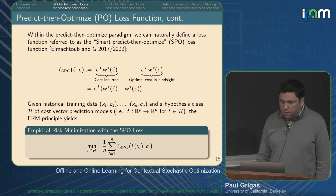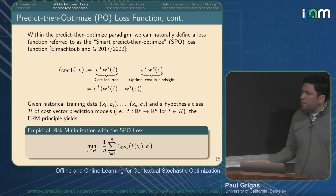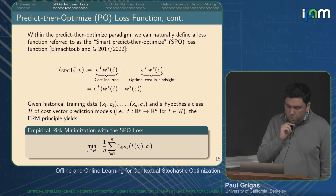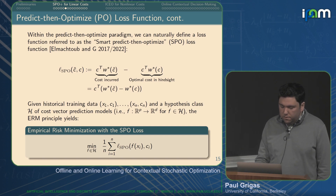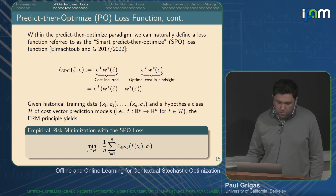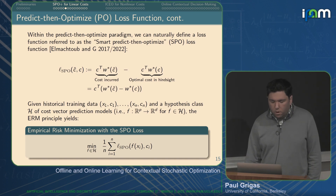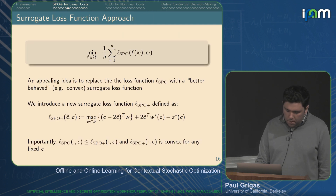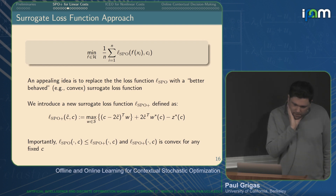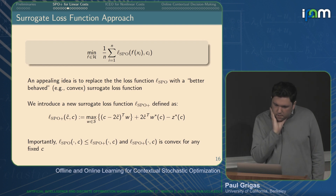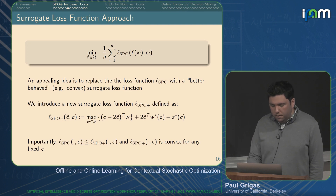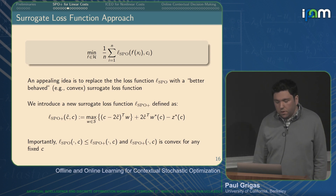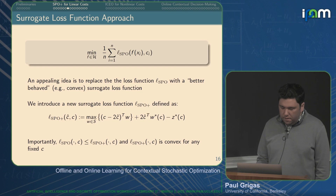If we're building a model based on data, we may want to minimize the empirical SPO loss on the training data. Because the SPO loss is difficult to work with — it's not even a continuous function in general — we need an alternative.